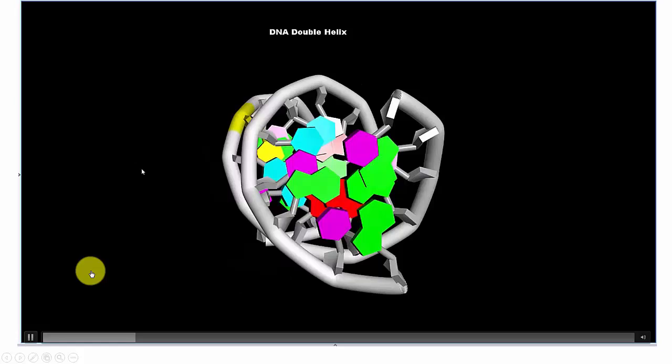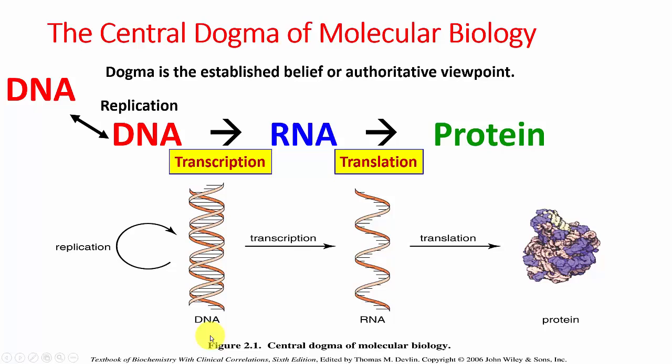DNA is replicated and has two strands. It's transcribed into RNA, which is a single-strand molecule, which is then read by a machine that produces proteins in our cells and our bodies. This makes up the various proteins that we need to sustain our living.